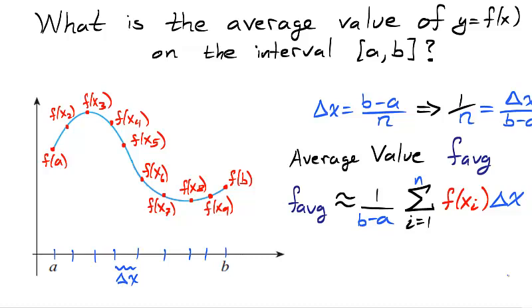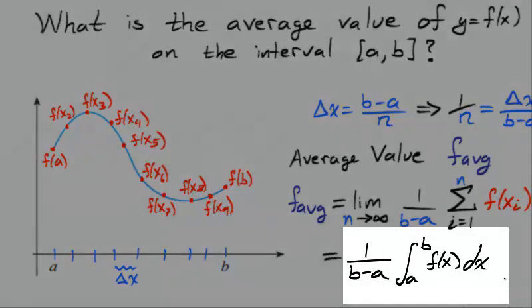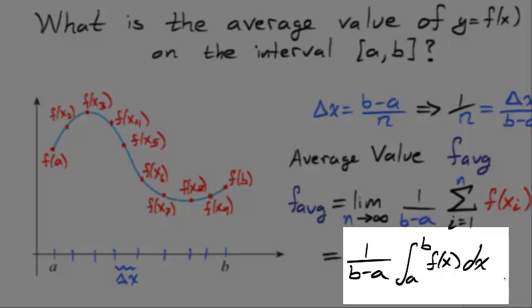The larger n gets, the more values we are averaging, so the limit as n approaches infinity of these approximations is the actual average value of f on the interval ab. That is, the average value f average on the interval ab is the integral from a to b of f divided by b minus a.